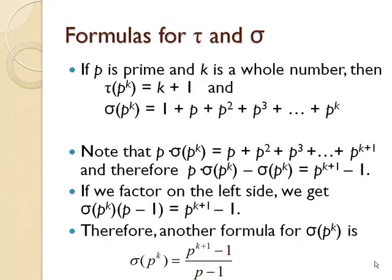You should have found that if P was a prime number and K was a whole number then tau of P to the K is K plus 1. And sigma of P to the K is 1 plus P plus P squared plus P to the 3rd all the way up to P to the K power. The factors of P to the K are all these different powers of P.